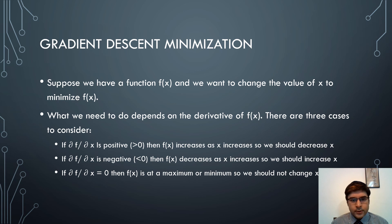Suppose we have a function F(X) and we want to change the value of X to minimize F(X). There are three cases: If ∂F/∂X is positive (slope > 0), then F(X) increases as X increases, so we should decrease X to find a minimum. If ∂F/∂X is negative (slope < 0), then F(X) decreases as X increases, so we should increase X. If ∂F/∂X equals 0, then F(X) is at a maximum or minimum, so we should not change X.